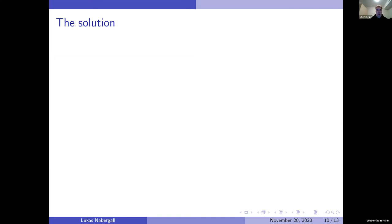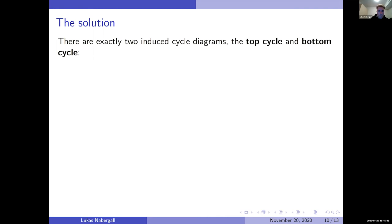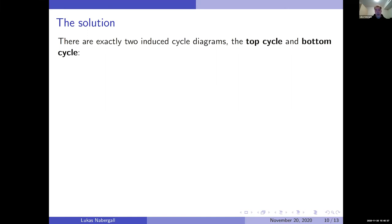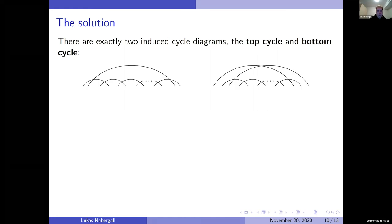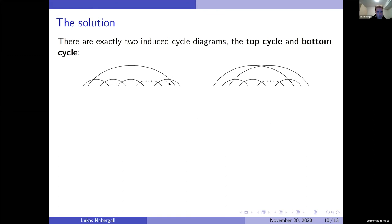What does the solution look like for these tree-like equations? We focus on the divided power one. One thing to mention: there are exactly two chord diagrams whose intersection graph — forgetting the directions — is an induced cycle (a cycle with no chords, i.e., a hole). These two induced cycle chord diagrams are what we call the top cycle and bottom cycle. These are the only two ways to make an induced cycle of any particular size.